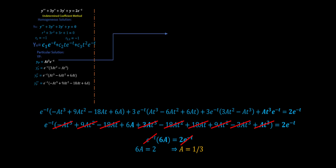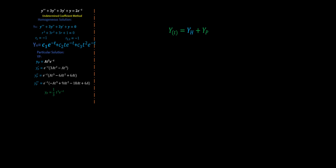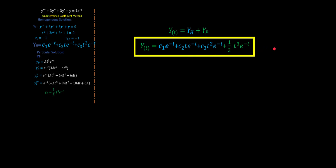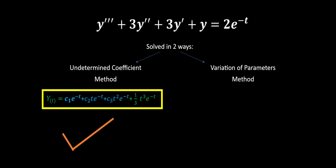Now let's go back to our original guess and update it. Since a is no longer unknown — it's one-third — we plug it in, and our particular solution is yp equals one-third t cubed e to the negative t. All that's left is to write up our final solution: y(t) equals the homogeneous part plus the particular part. Plugging everything in, we have found the solution to our ODE. Undetermined coefficient method — done.